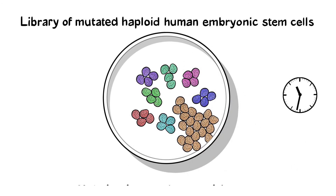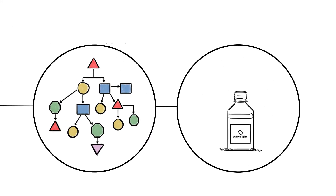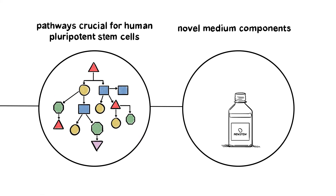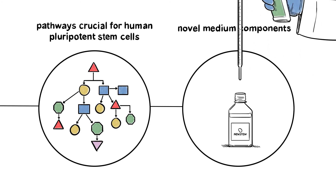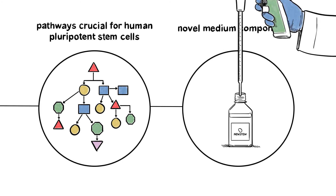or take over the culture, indicating the mutation occurred in a gene that restricts cell growth. These findings highlight pathways crucial for human pluripotent stem cells and enable the identification of novel medium components.